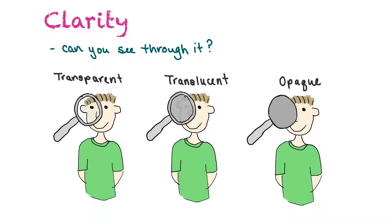Clarity asks whether or not you can see through a substance. Something transparent, like a piece of glass, you can see right through. Translucent materials let some light through but you can't see through clearly — frosted glass is an example, like on a bathroom window, so some light gets in but you can't see through. Opaque materials block all light completely.